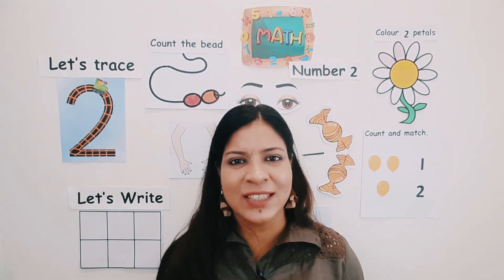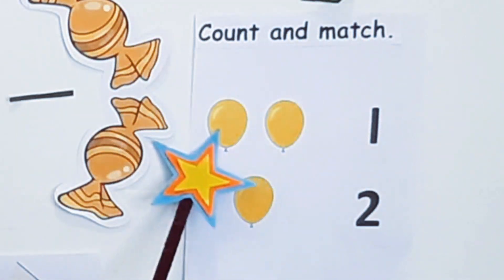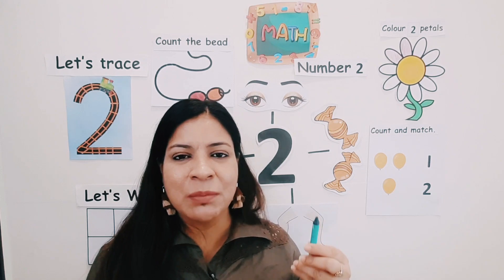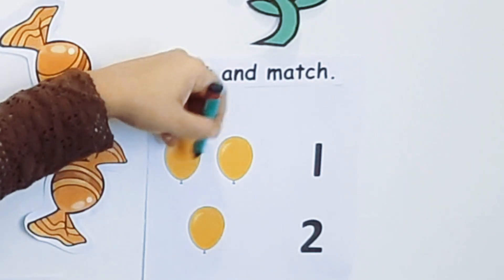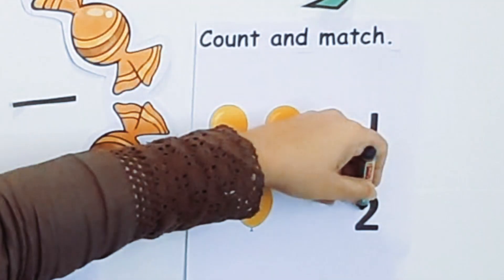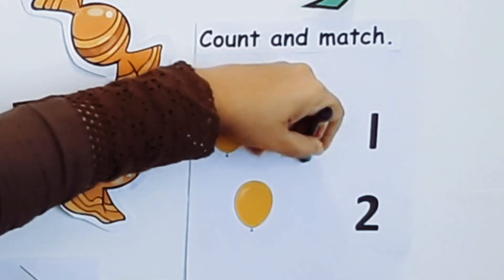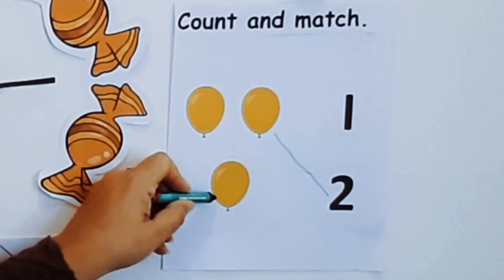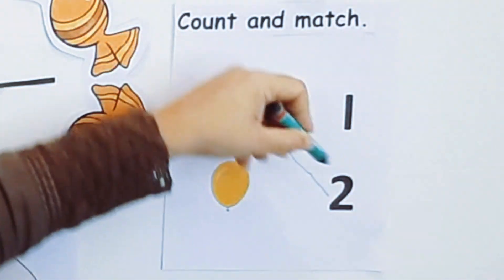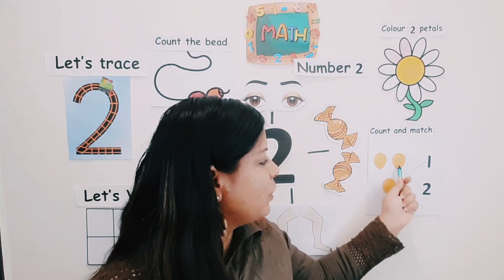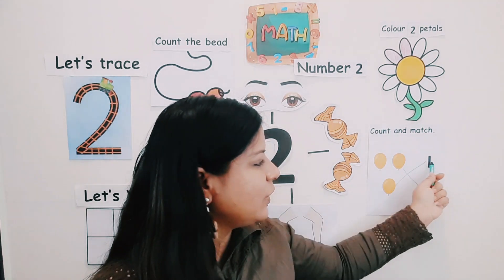Now let's see what's there in the worksheet: count and match. Some balloons are given — I have to count the balloons and match with the correct number. I'm using my dark green crayon to match. One, two — is this number two? No, this is number one. Number two — yes! I will match two balloons with number two. Now one balloon — where is number one? Number one is right here. Match! So I matched two yellow balloons with number two and one yellow balloon with number one.